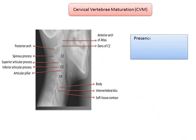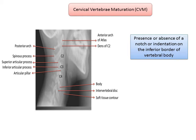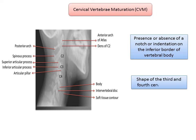Two morphologic characteristics are monitored in the CVM method. The first is the presence or absence of a notch or indentation on the inferior border of each of the three vertebral bodies — C2, C3, and C4. The second feature is the shape of the C3 and C4 bodies, which changes from trapezoid to rectangular horizontal, to square, and finally to rectangular vertical.